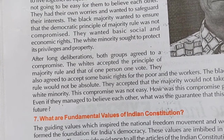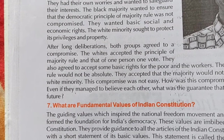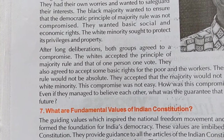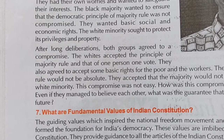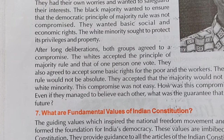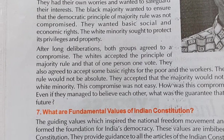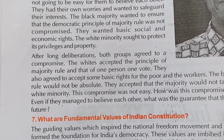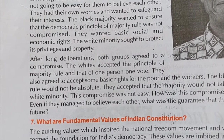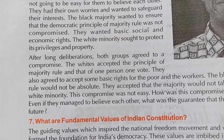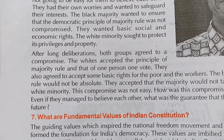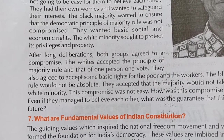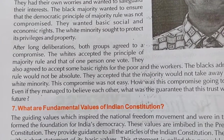The whites accepted the principle of majority rule and one person, one vote. They also agreed to accept some basic rights for the poor and the workers.